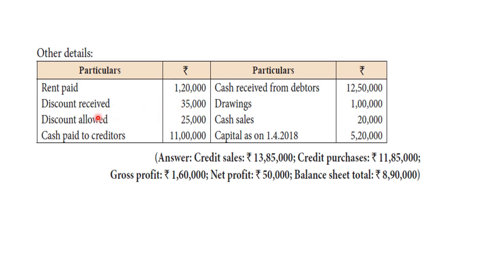Other details: cash paid to creditors 11,00,000; discount received 35,000; discount allowed 25,000; cash received from debtors 12,50,000; drawings 1,00,000; cash sales 20,000. The opening capital is 5,20,000.